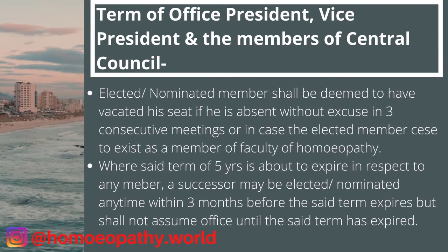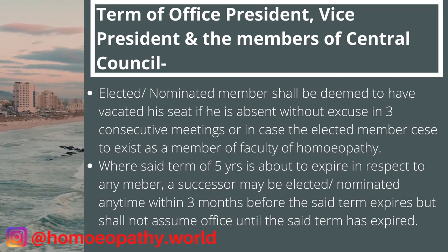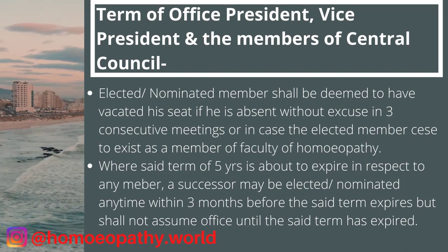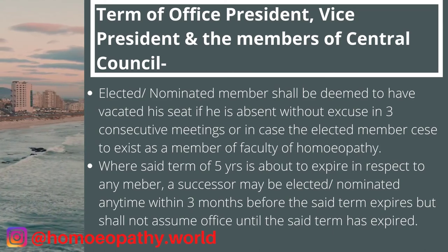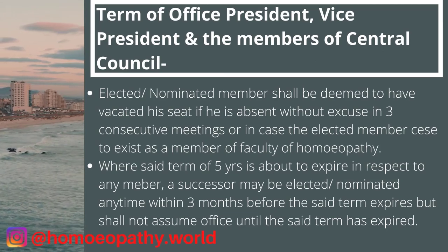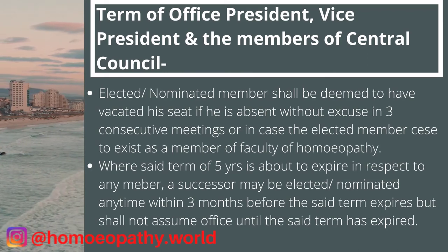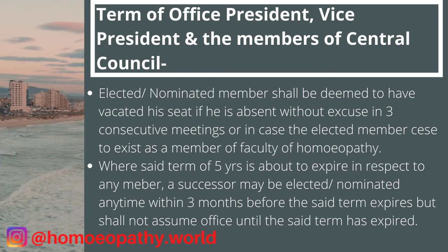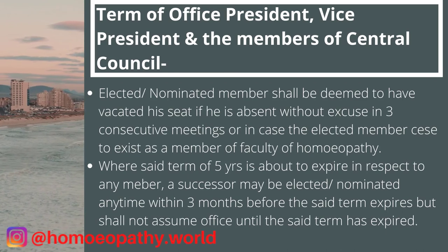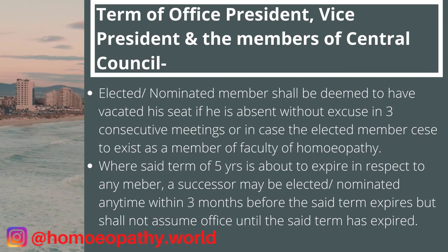An elected or nominated member shall be deemed to have vacated their seat if absent without excuse for three consecutive meetings, or if the elected member ceases to be enrolled in the state register or ceases to exist as a member of the faculty of homeopathy. Where the set term of five years is about to expire in respect of any member, a successor may be elected or nominated any time within three months before the term expires, but that successor should not assume office until the previous member's set term has expired.